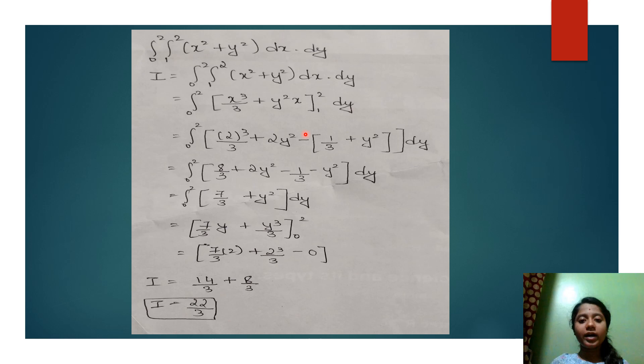So it will be 2 cube by 3 plus y square times 2, which is 2y square, minus the same equation by substituting the lower limit 1 in the place of x. That is 1 cube will be 1, so it is 1 by 3 plus y square into 1 is y square itself, into dy.